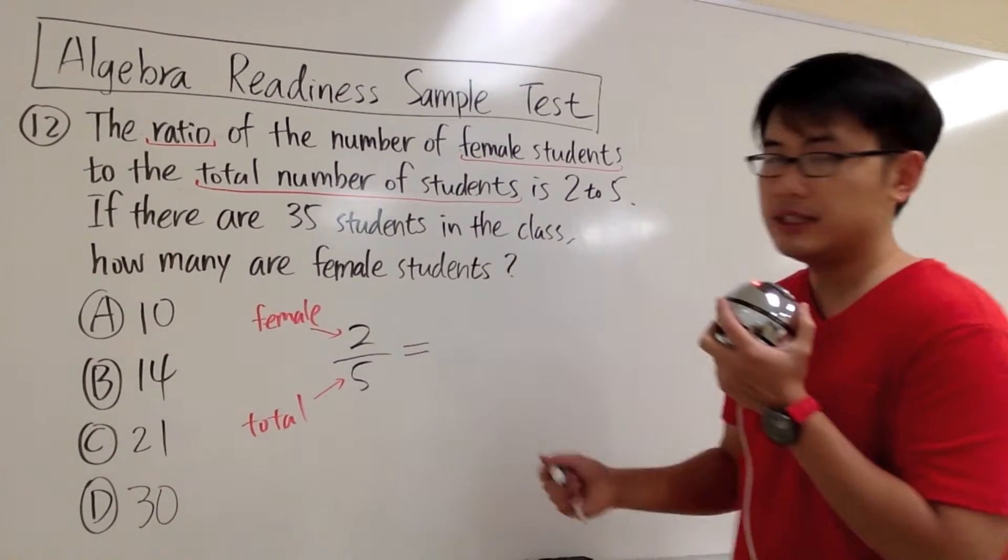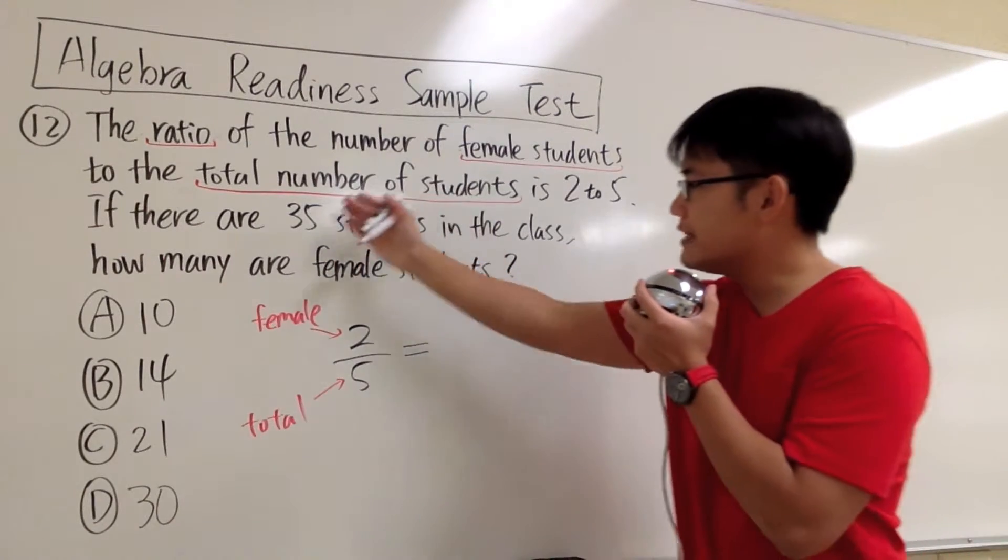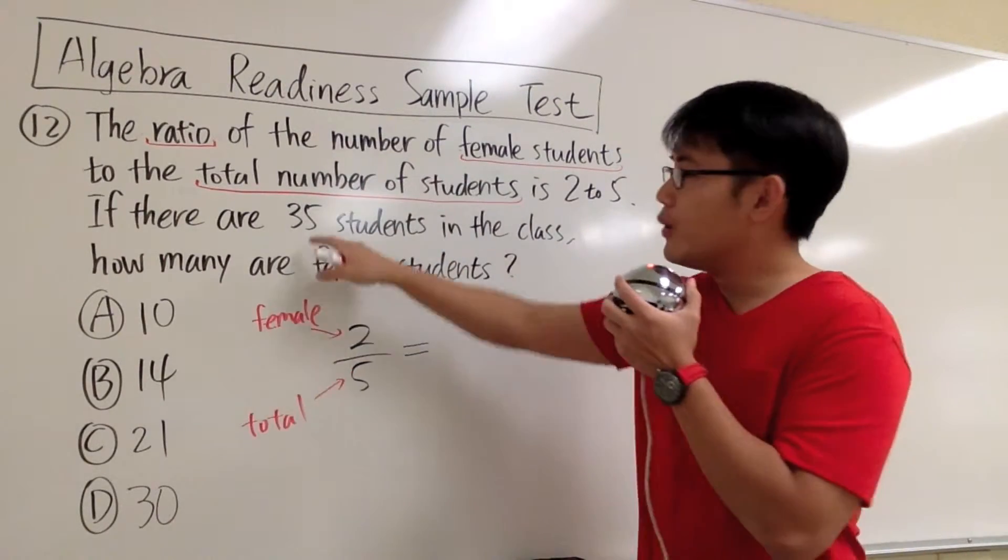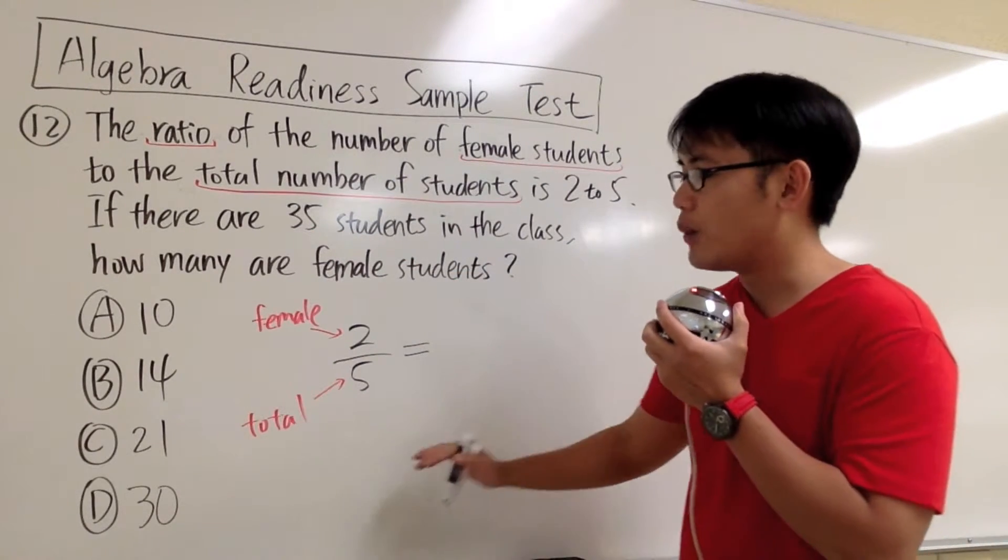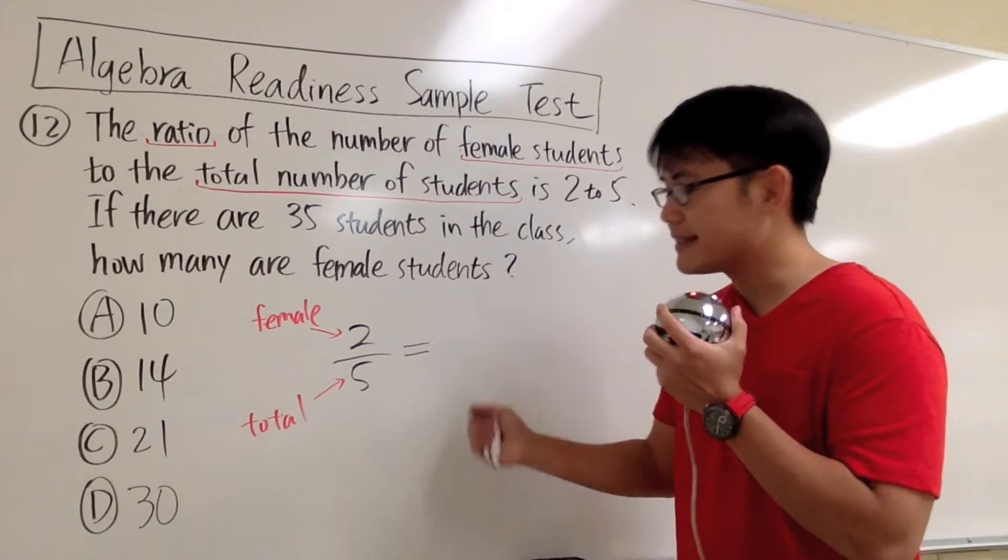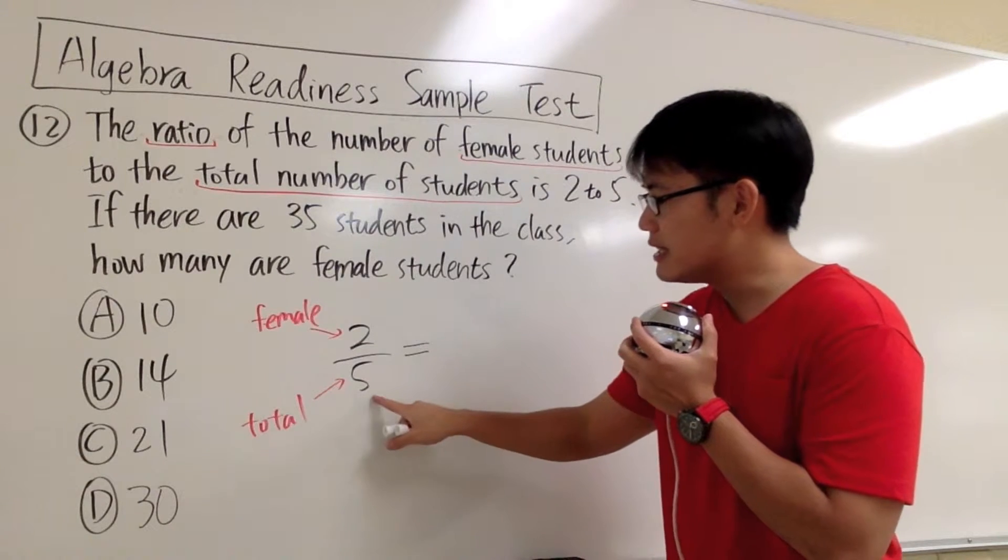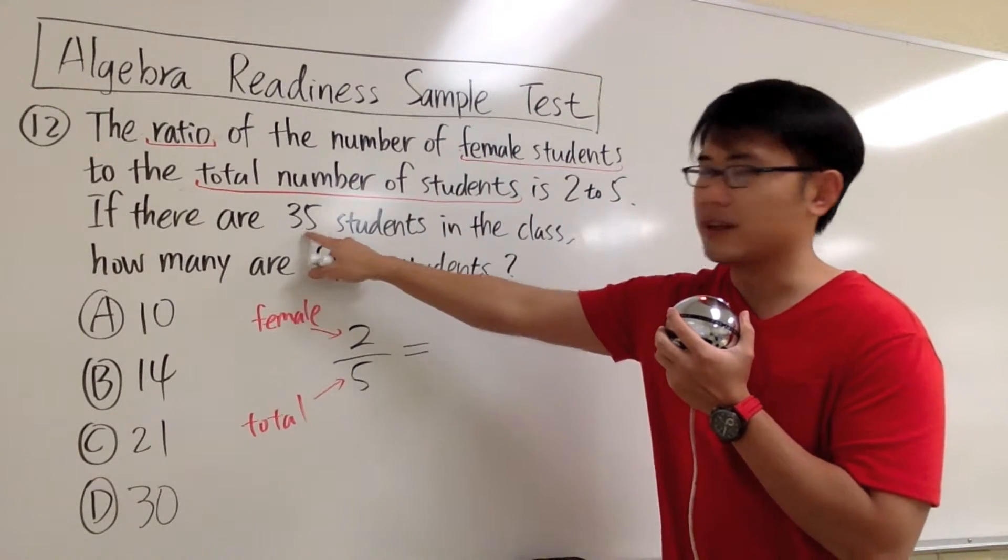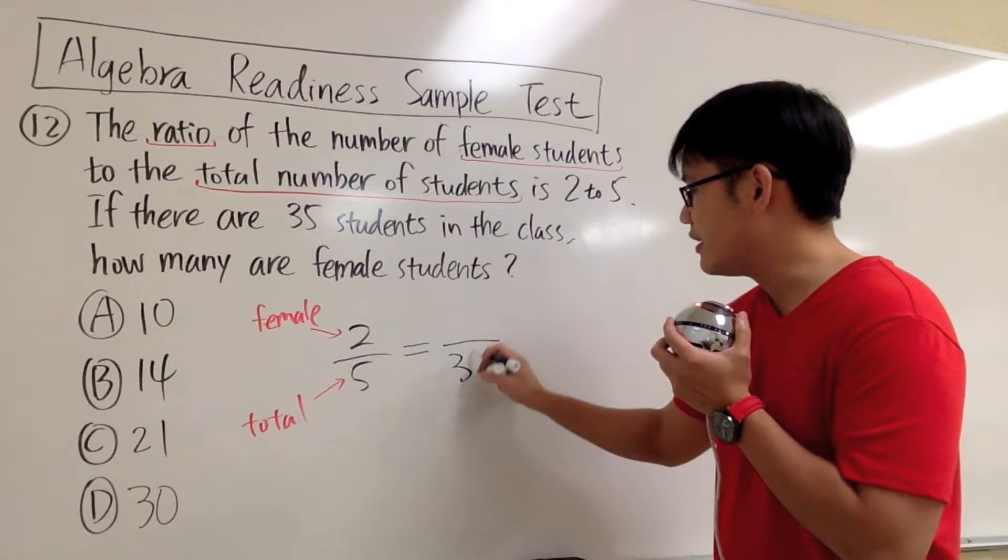We know there are 35 students, and the 35 is the total. Therefore, when setting a ratio for this part, we're going to write down the 35 in the denominator, just like we did here. Remember, when setting ratios on both sides, we must be consistent. The denominator stands for the total, that's why we put the 35 on the denominator. I'll put down the fraction bar and the 35.